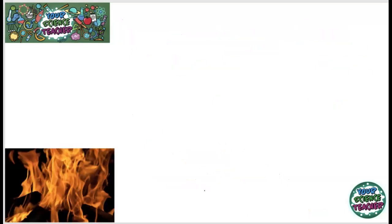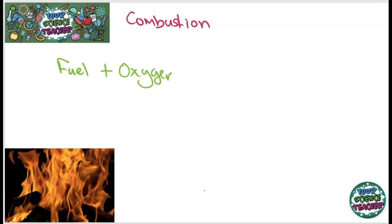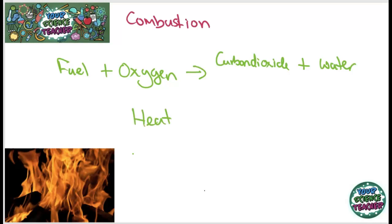I said we'd look at combustion reactions, and we are on to that section now. Whenever you have a fuel and you combust it, you react it with oxygen in the air. This always makes two products: carbon dioxide and water. These reactions often produce a lot of heat — you've probably been sat around a warm fire before and felt just how warm it gets.